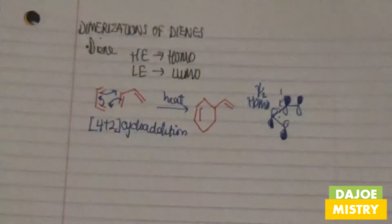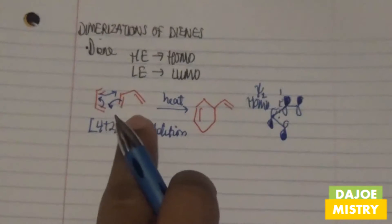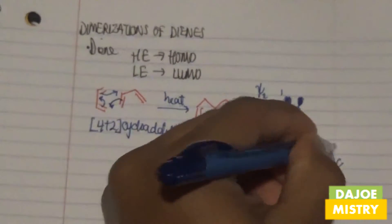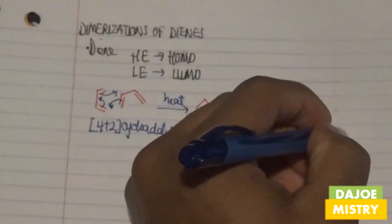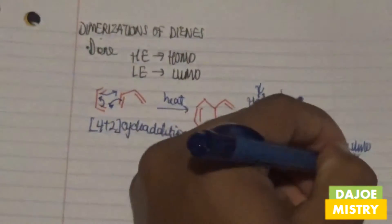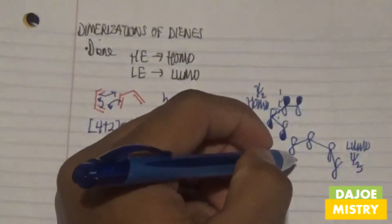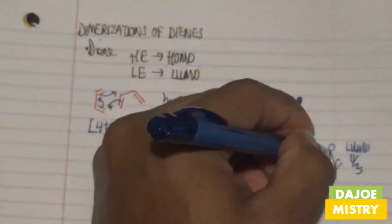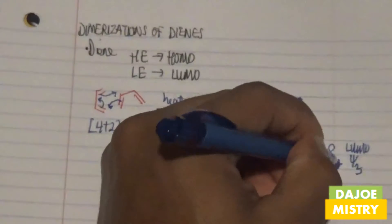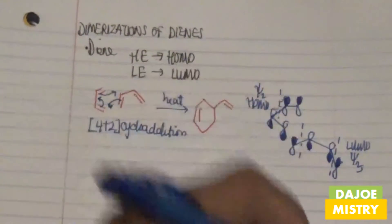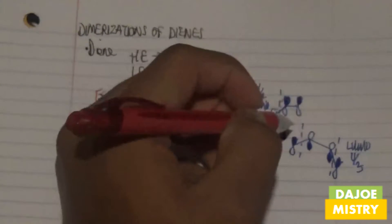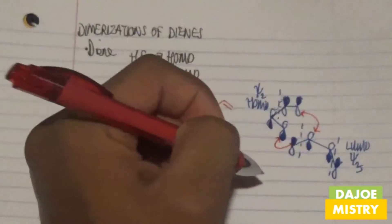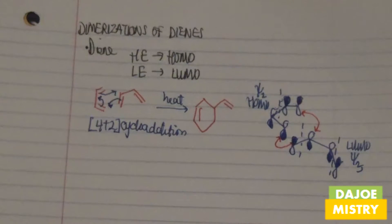Looking at the other compound, we use ψ3, which is the LUMO state. In this LUMO arrangement, the first part is out-of-phase with the other lobe, these two carbons are in-phase with respect to each other, and these are out-of-phase — forming two symmetrical nodes. Because of this symmetry, we get nice orbital overlap at both ends since they are both in-phase with respect to each other, giving us nice orbital overlap and formation of our sigma bonds.